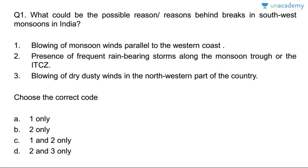Hey guys, please watch these seven lessons in a row and judge yourself if you are attacking UPSC or not this year. Question one: what could be the possible reason or reasons behind a break in southwest monsoons in India? Options include blowing of monsoon winds parallel to the western coast, presence of frequent rain-bearing storms along the monsoon trough or ITCZ, and blowing of dry dusty winds in the northwestern part of the country.